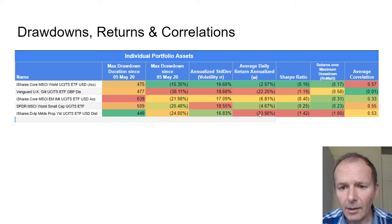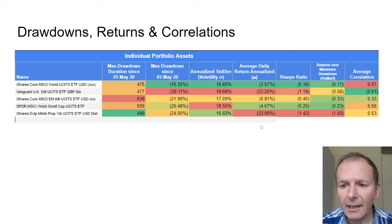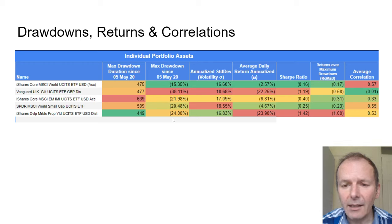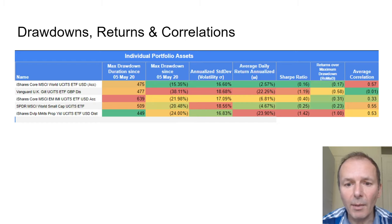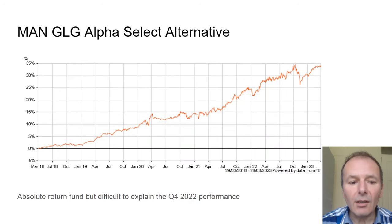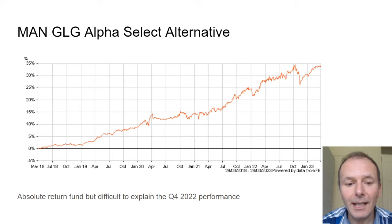Property returns are absolutely horrible, with volatility about the same as a global tracker. So if we had this as a portfolio, we'd be pretty disappointed because it's all just bombing out at the same time.